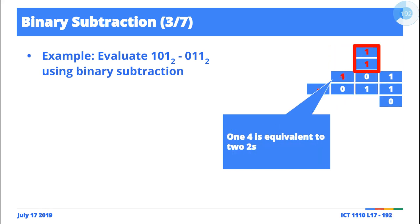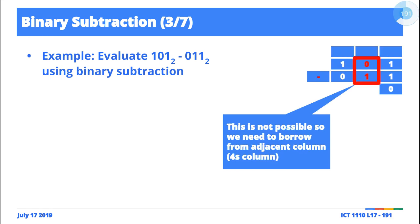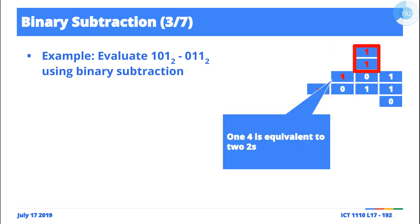You notice that the thing we're evaluating is the twos column. When we borrow from the adjacent column, it means we are borrowing from the fours column. When we borrow one from the fours column, what we're saying is we are borrowing two twos. Two twos equals four, right? Let that sink in. So we've borrowed two twos.